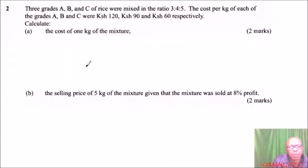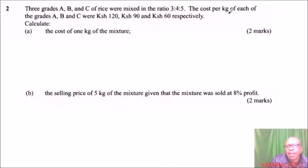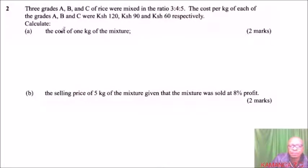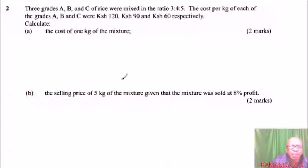Question number two: three grades A, B, and C of rice were mixed in the ratio 3:4:5. The cost per kilogram of each grade A, B, and C were Kenyan shillings 120, 90, and 60 respectively. Calculate (a) the cost of 1 kg of the mixture, and (b) given the mixture was sold at 8% profit.